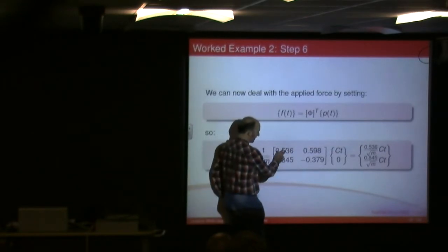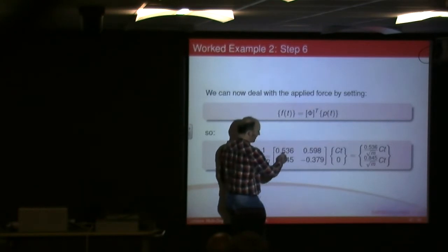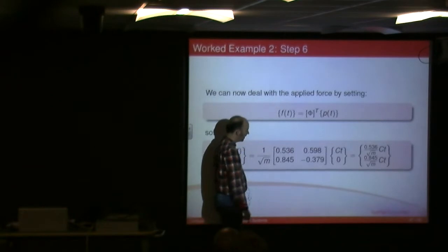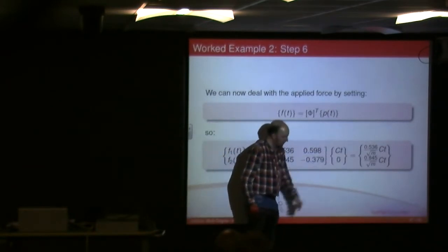Obviously I've got this times by this, plus this times by this, so it's quite clearly going to be this times by CT divided by root m. That's my root m. And here I've got 0.85 divided by root m times by CT for my second one.